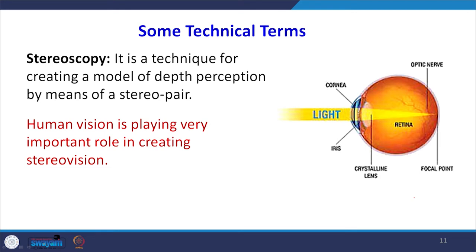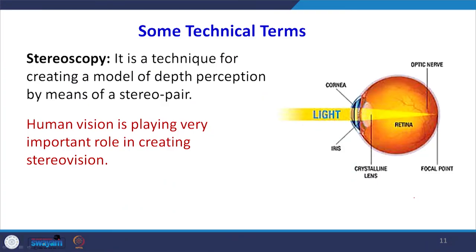Let us understand the stereoscopy which is created by our human eyes, because they play a very important role in stereo vision. We have to feel the depth. There are two images, one in the left eye and one in the right eye, and these two images are focused at the retina. Light rays enter from the left photograph to the left eye and from the right photograph to the right eye, are focused at the retina, sent to the mind, and the mind does the fusion and blending and makes an interpretation of that object.